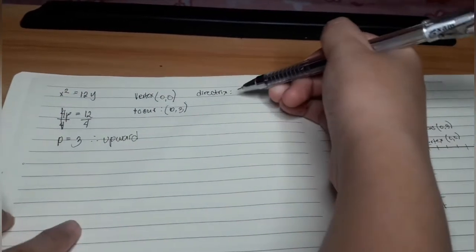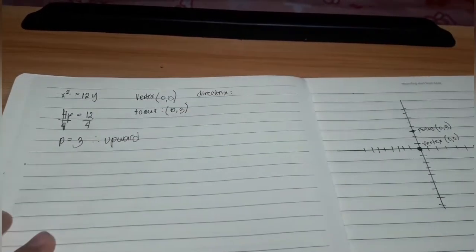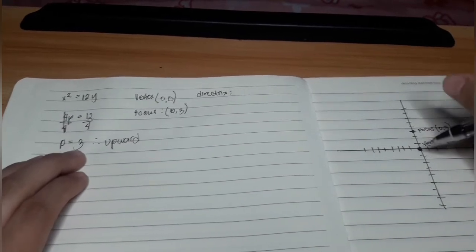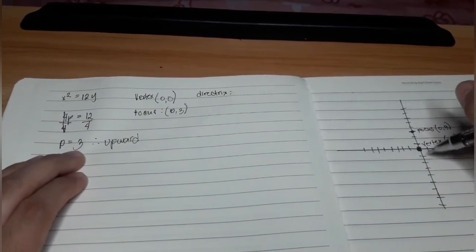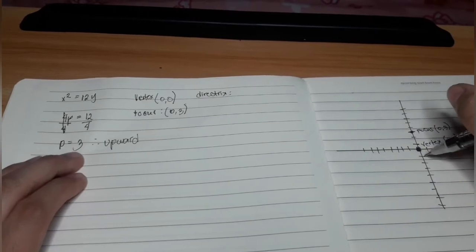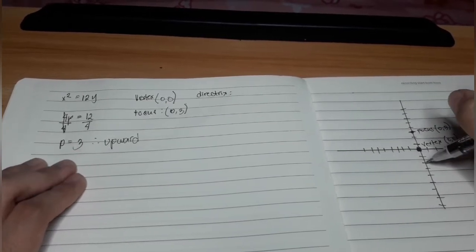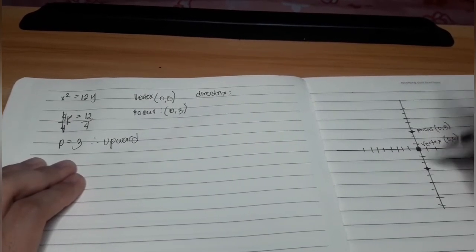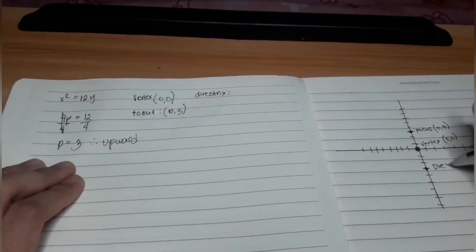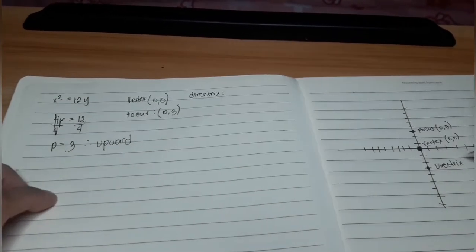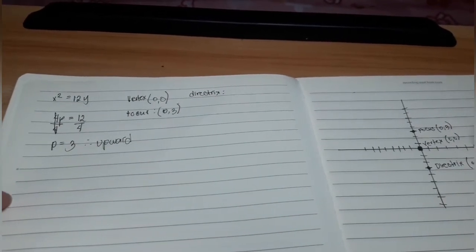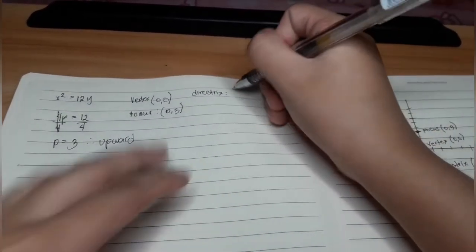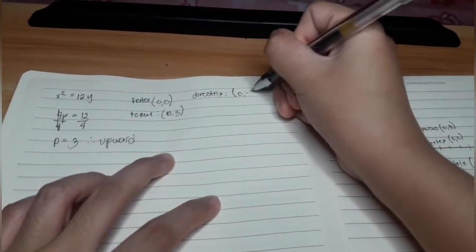In order for us to find the directrix, we need to move 3 steps downward. 1, 2, 3. So here it is, the directrix. Our directrix is 0 and negative 3.